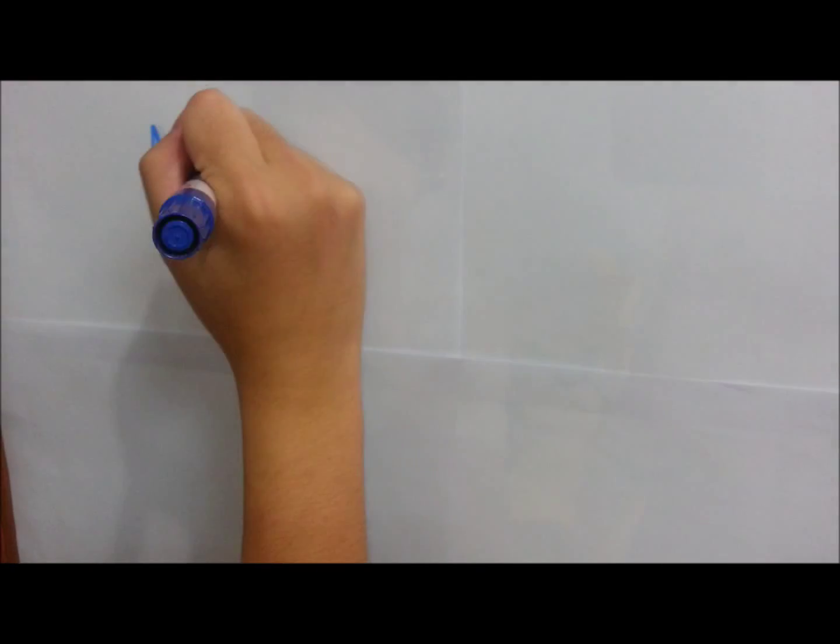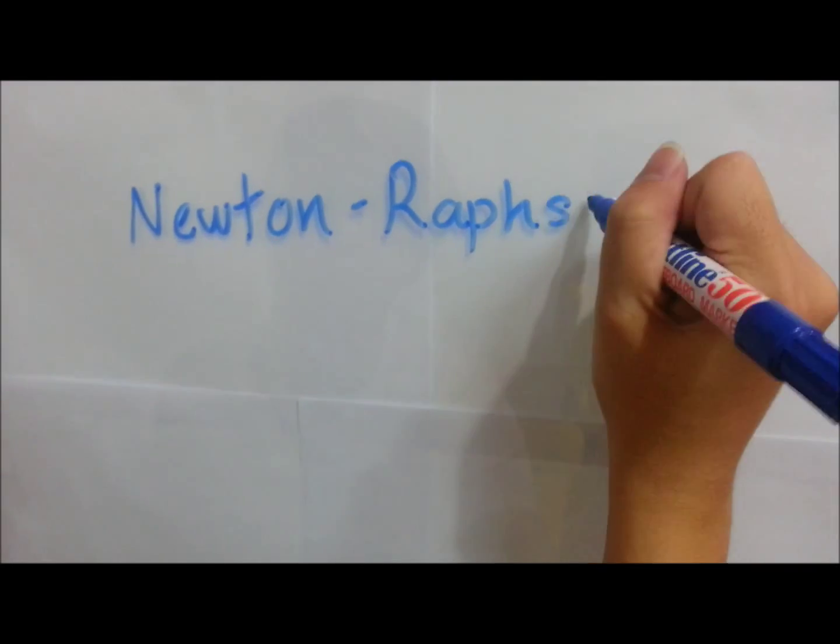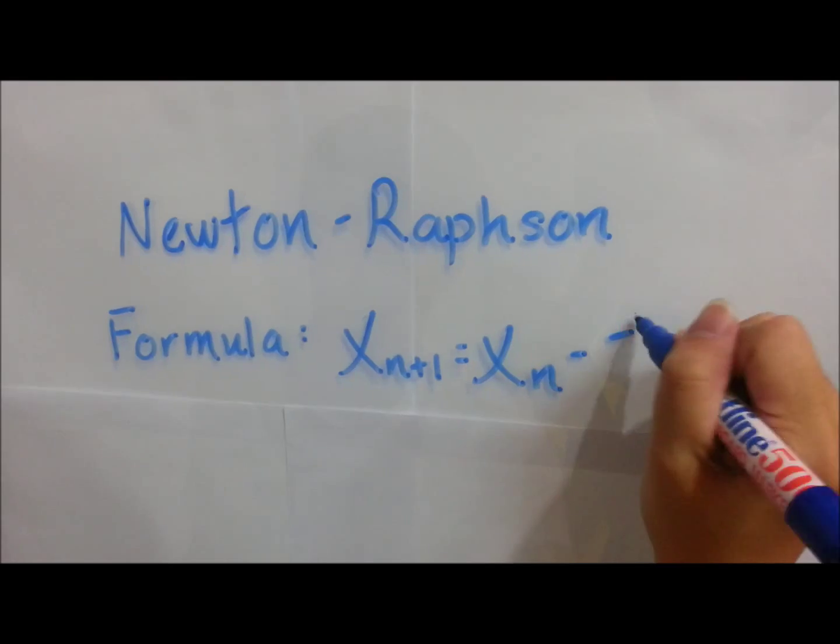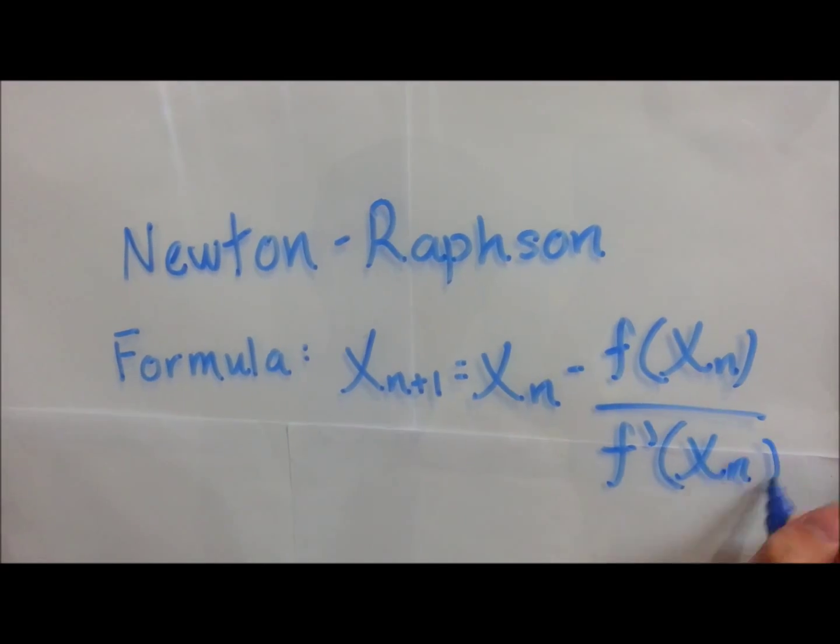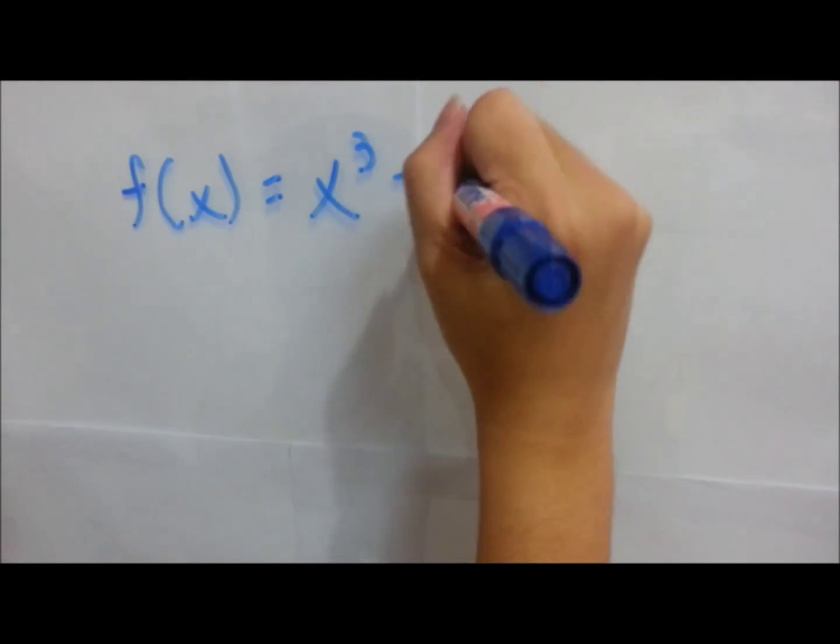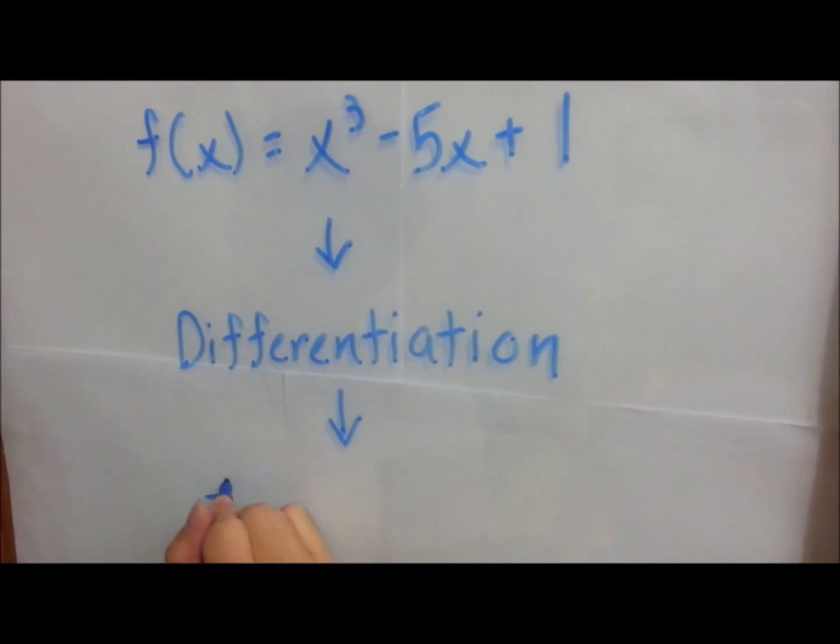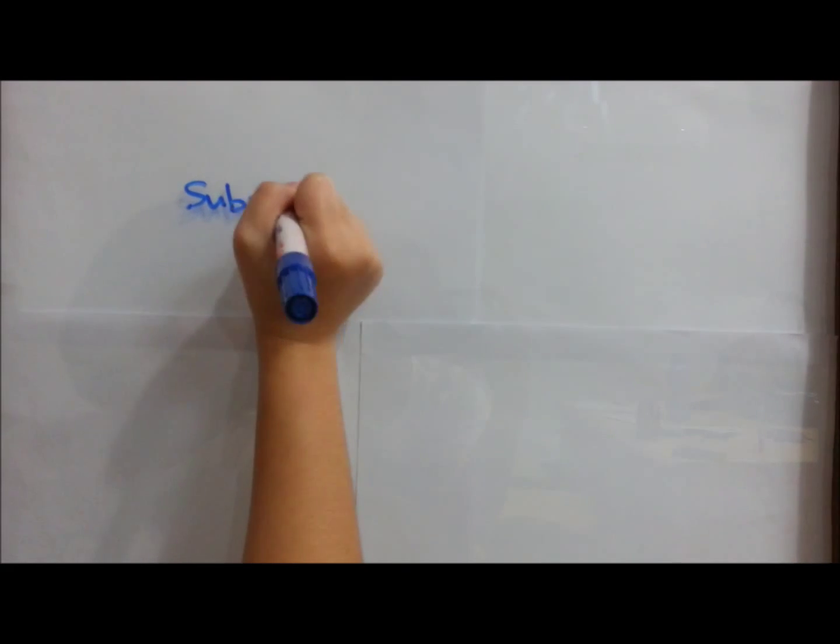The formula for Newton-Raphson is x_{n+1} equal to x_n minus f(x_n) over f'(x_n). The first step is to differentiate the equation above, and you will get f'(x) equal to 3x squared minus 5. Next,